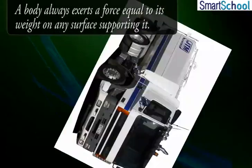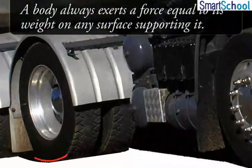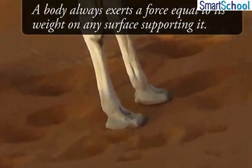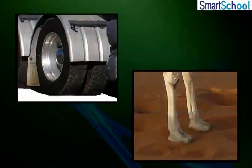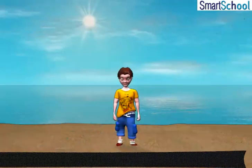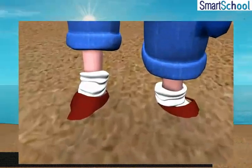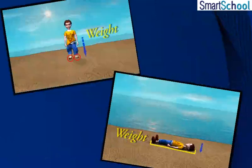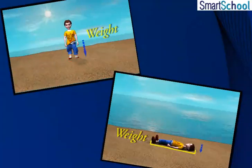A body always exerts a force equal to its weight on any surface supporting it. The effect of this force on the surface depends on the area on which it is spread. That is why when you stand on loose sand, your feet go deep into the sand. But if you lie down on the sand, your body does not go that deep. In both cases, the force exerted on the sand is the weight of the body, yet its effect is different.